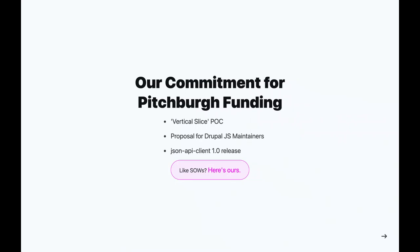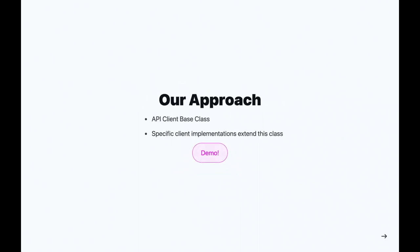Part of the reason for the POC is to validate what we're doing, but also to make it easier to start having conversations with the community and Drupal's JavaScript maintainers — with the idea that hopefully this is something we can build in the community and could be offered under the Drupal namespace on NPM. The final official release as far as this commitment is a JSON API client 1.0 release, hopefully pretty fully featured. There's a link to our scope of work for all of the details.